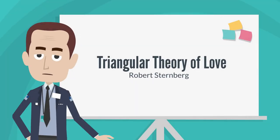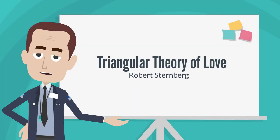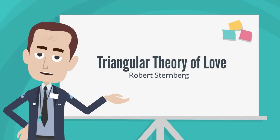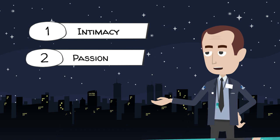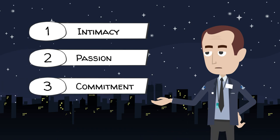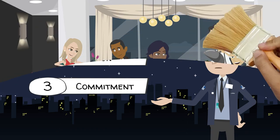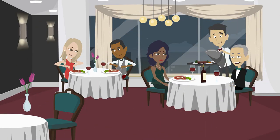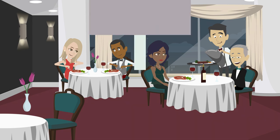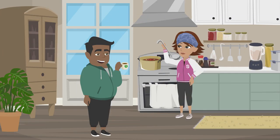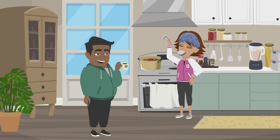Robert Sternberg's triangular theory of love suggests that love comprises three components: intimacy, passion, and commitment. Intimacy involves feelings of closeness, connectedness, and bondedness. It's the emotional component, contributing to the sense of warmth in a loving relationship.